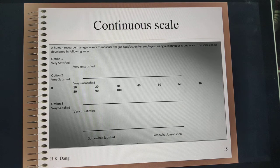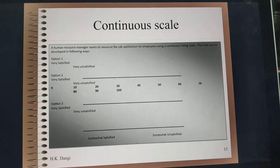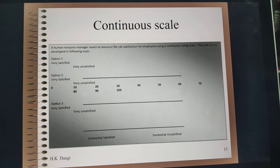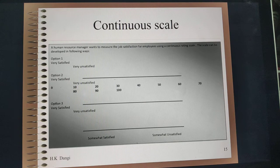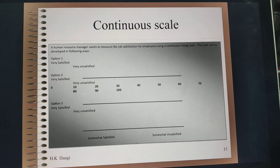For the continuous scale, a human resource manager wanting to measure job satisfaction of employees gives two extremes — highly dissatisfied to very satisfied — ranging from 0 to 100. But that may not give a clear idea of what a particular point means in the spectrum. So generally you provide ranges such as 0 to 10, 10 to 20, 20 to 30, and so forth, and assign labels — for example, 10 to 30 means not satisfied, and 90 to 100 means very satisfied. Getting responses and analyzing this kind of data is relatively difficult.